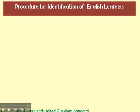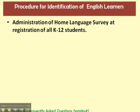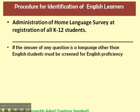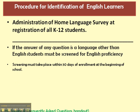First, let's start talking about the procedure for the identification of English language learners. The first thing that's done is a home language survey is completed at registration. If this home language survey indicates that there is another language other than English, then the students need to be screened for English proficiency.